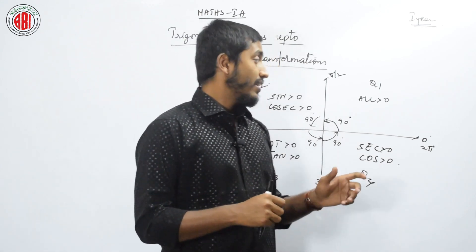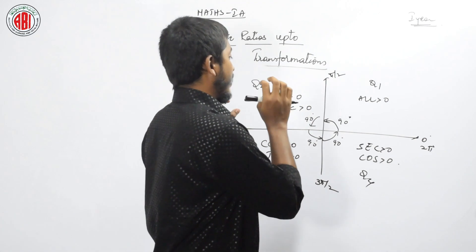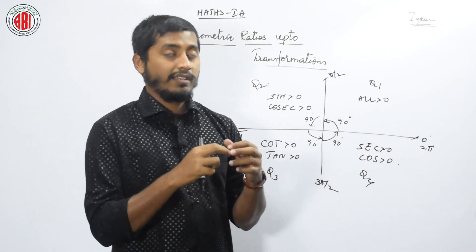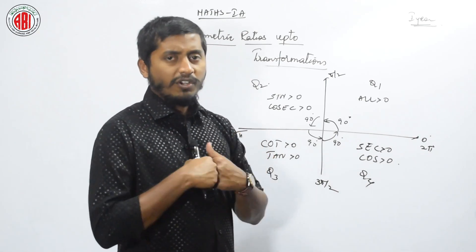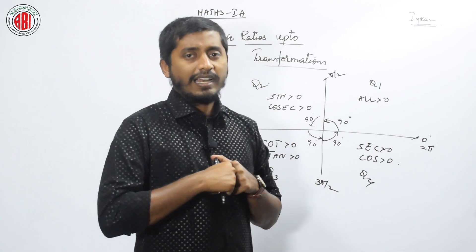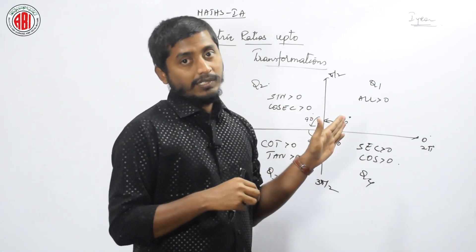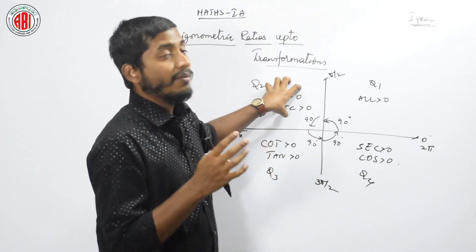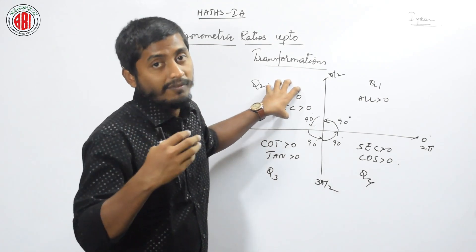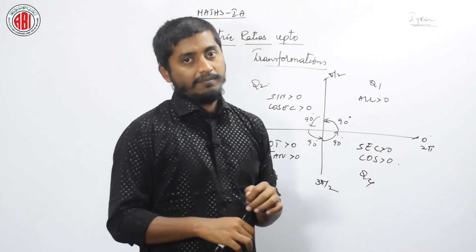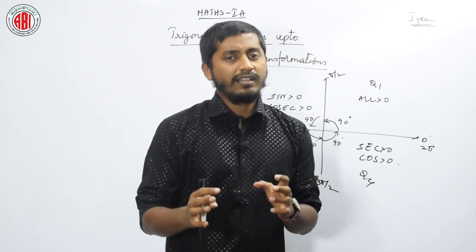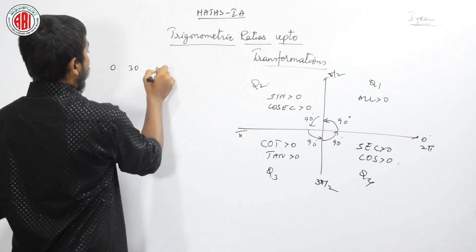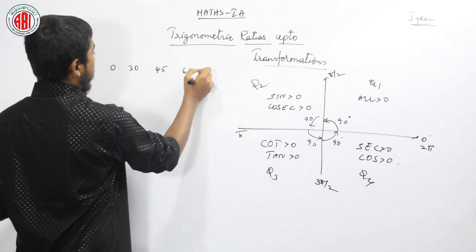What is the need for knowing which ratios are positive in which quadrant? For example, if I want to find the ratio of sin 135, I can write it as sin of 90 plus 45, which puts it directly in the second quadrant. In that quadrant the sin value will be positive. Let us see the standard angles: 0, 30, 45, 60, and 90 degrees.